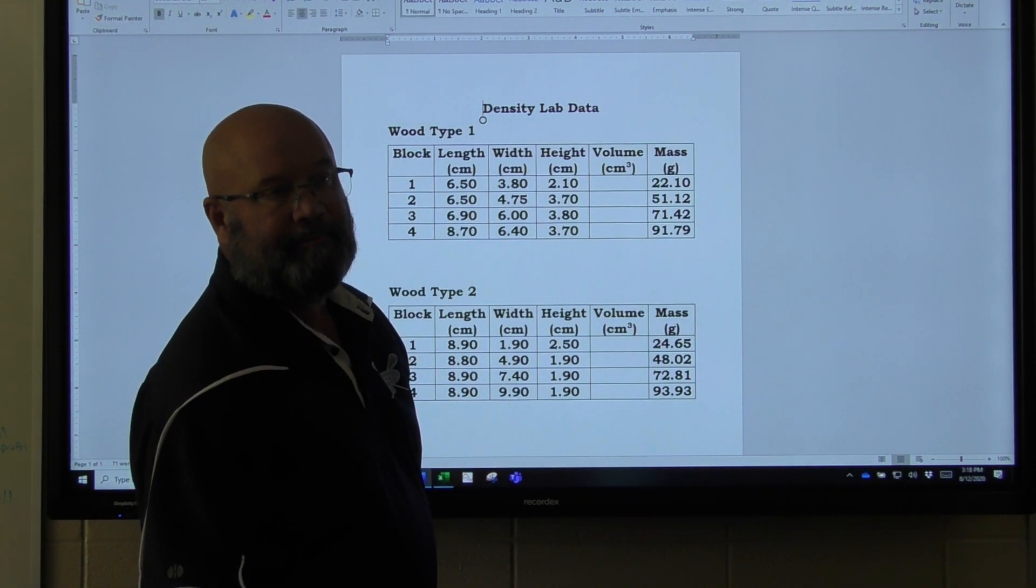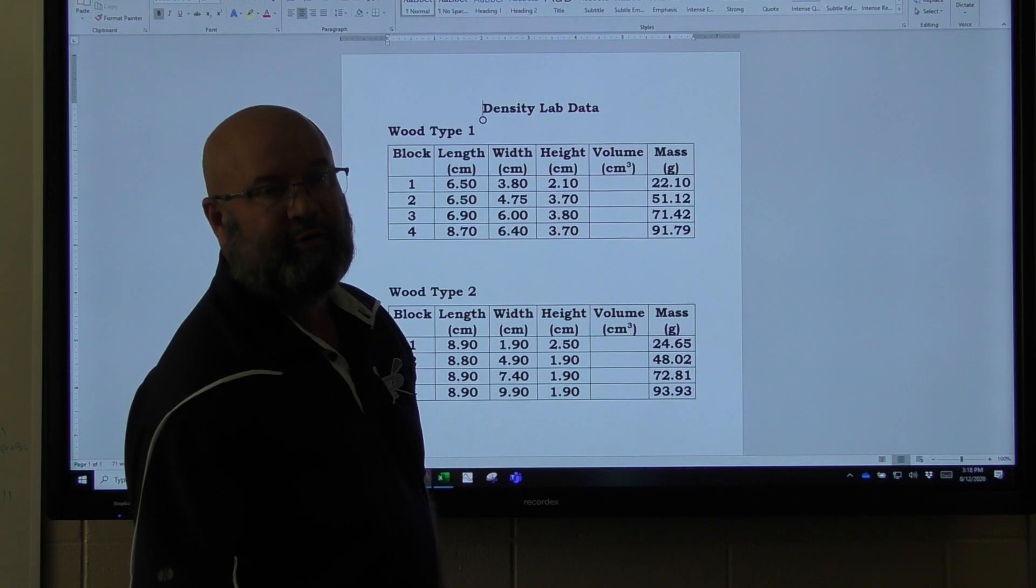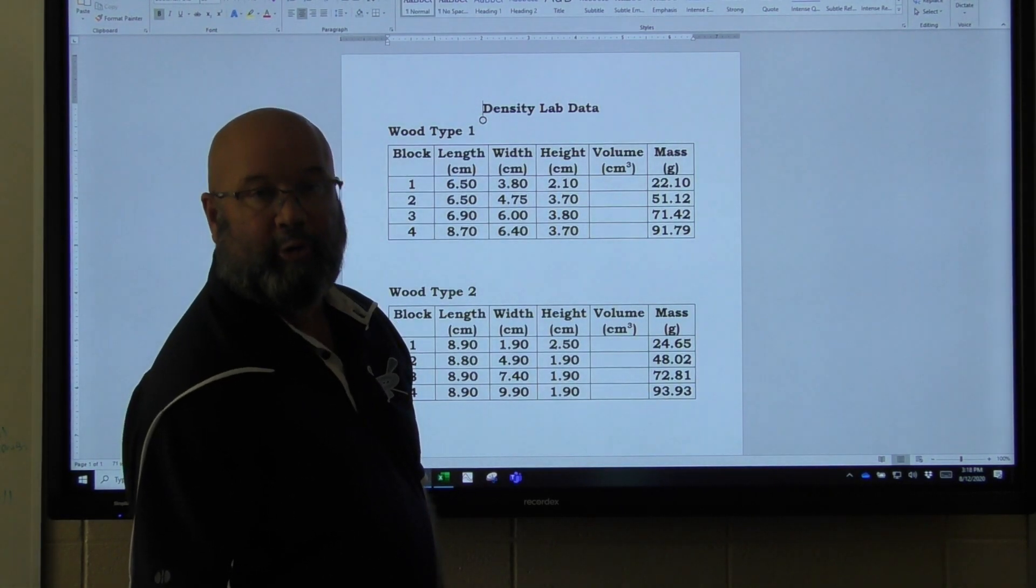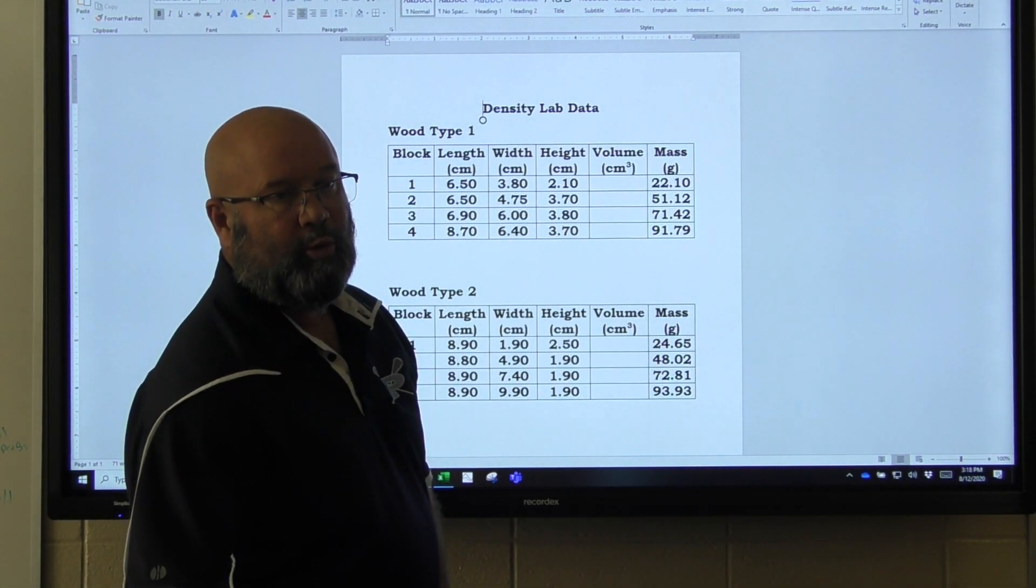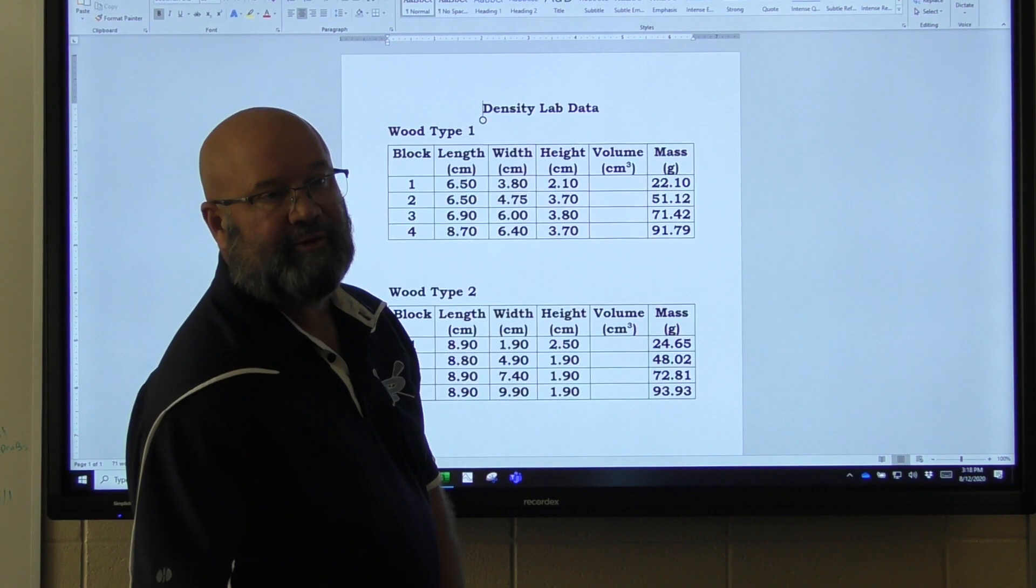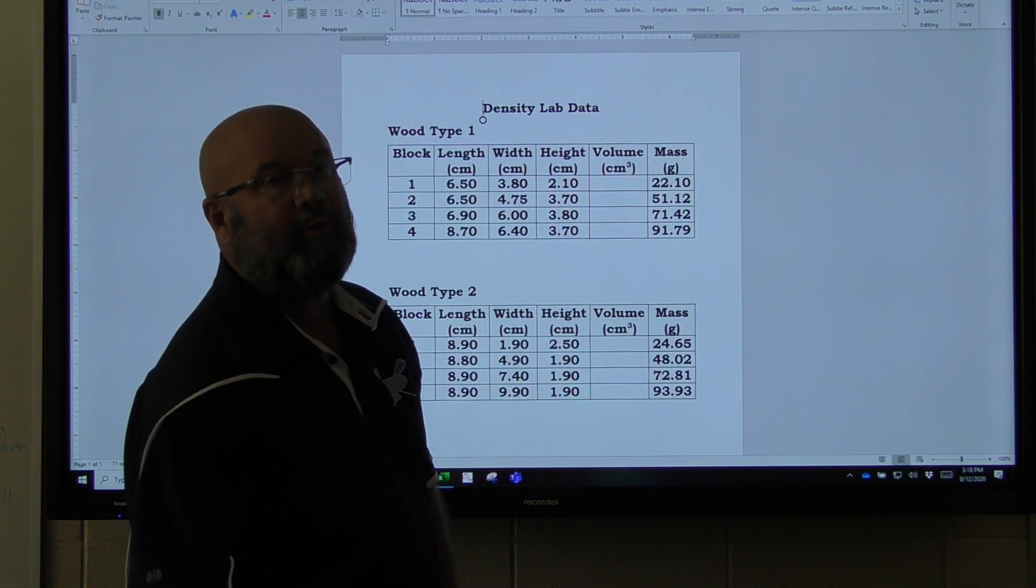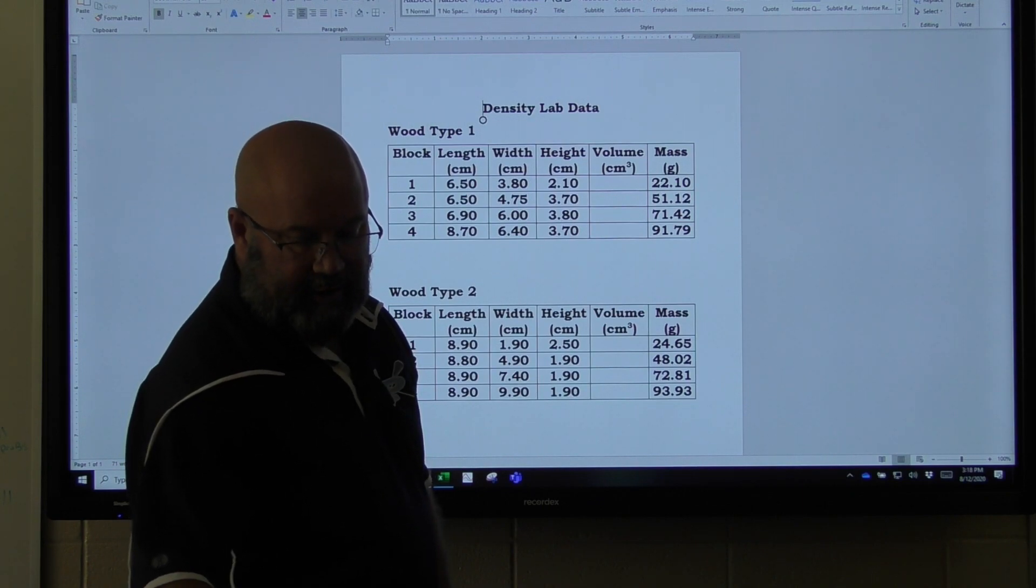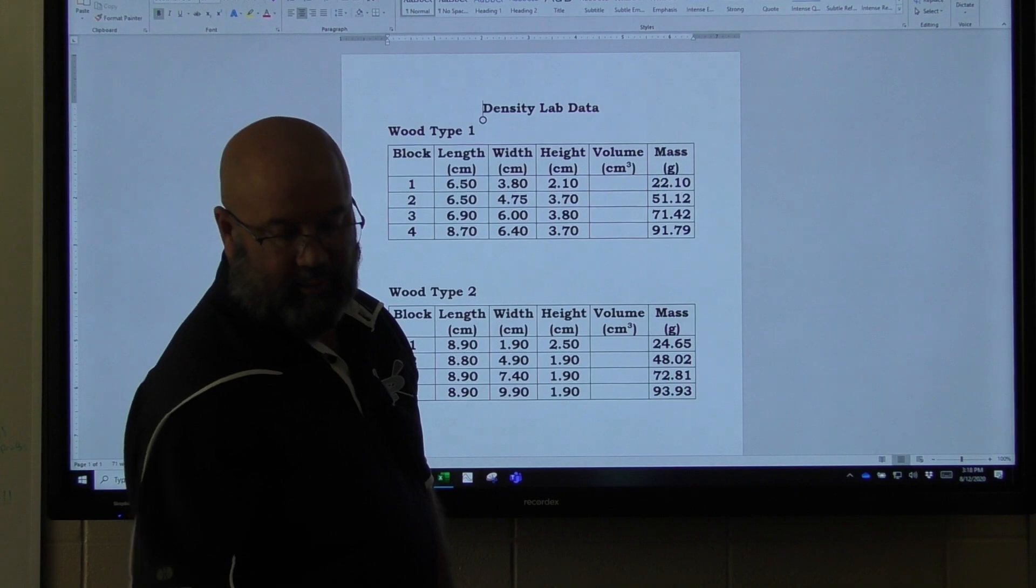Once we have those densities, then we can discuss what the densities mean. Usually the most common practice with densities is to relate them to the density of water, which is one gram per centimeter cubed or one thousand kilograms per meter cubed. Something that's got a greater density than that will usually sink; something that's got less density than that will usually float.